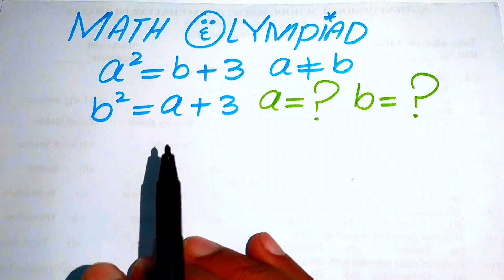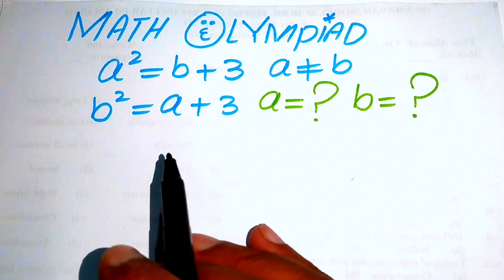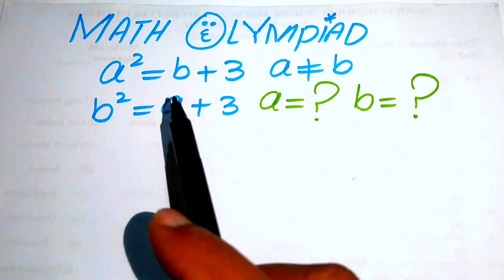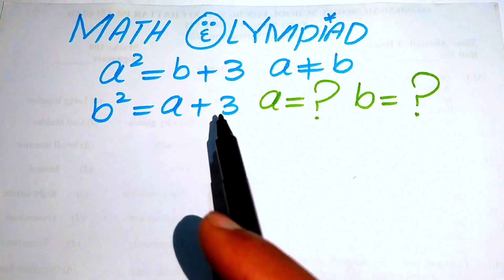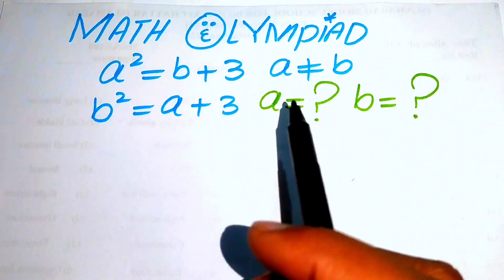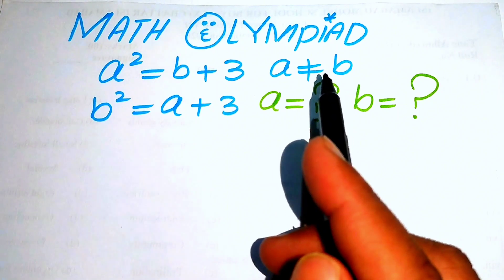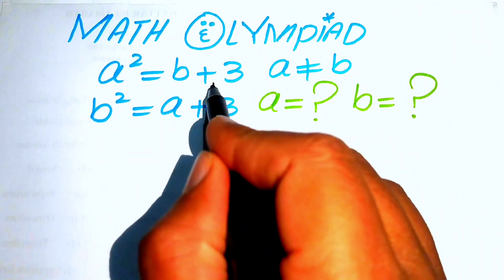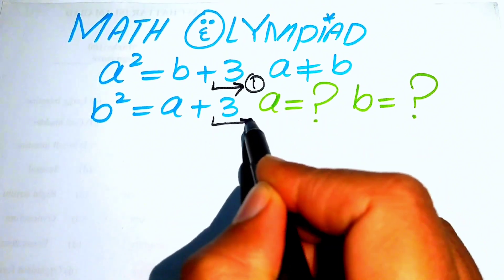Hello everyone, welcome back to the Map of Mathematics. In this video we are going to solve a nice algebraic challenge: a squared equals b plus 3, and b squared equals a plus 3. We need to find the values of a and b, with the restriction that a is not equal to b.